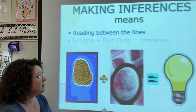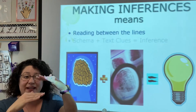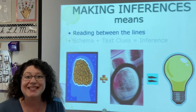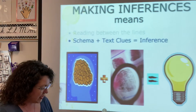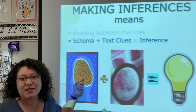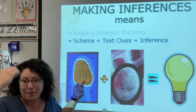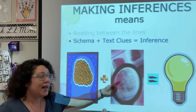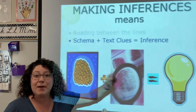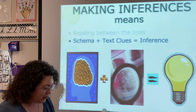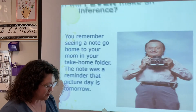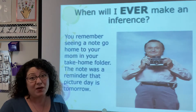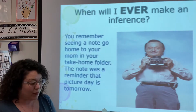Making an inference means reading between the lines. If there are two lines, you're reading what the author didn't write. You're using your schema — a fancy word for your background knowledge, your brain filing cabinet — combined with text clues. That's where you come up with your answer; your light bulb goes off. You make inferences all the time; you just might not have known that's the word for it.